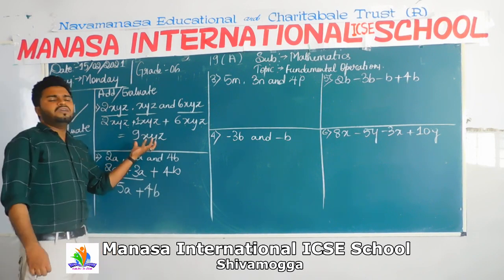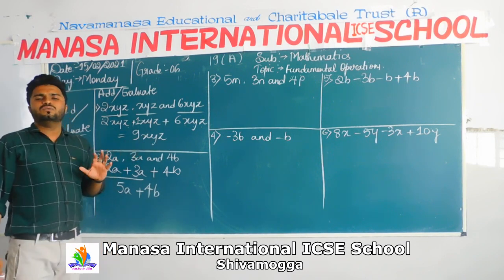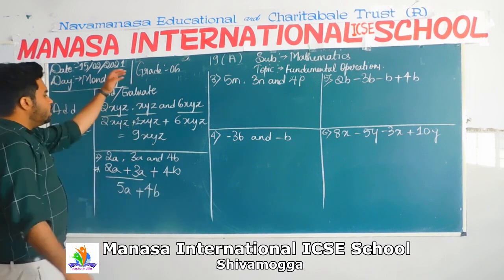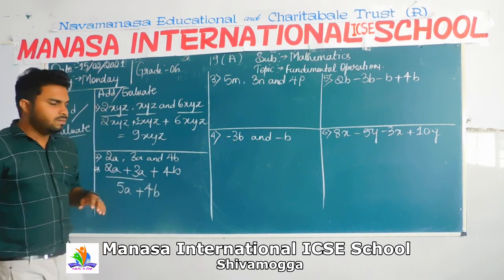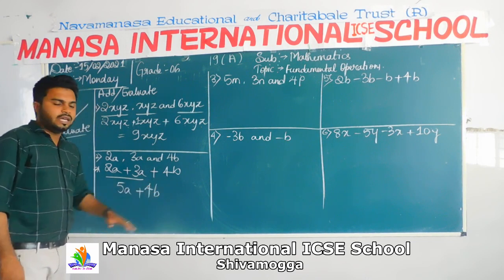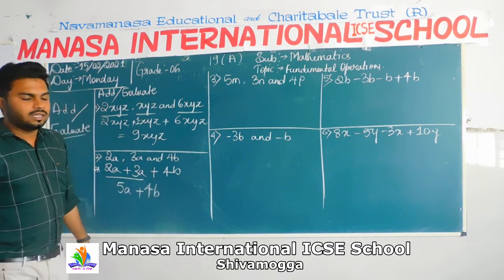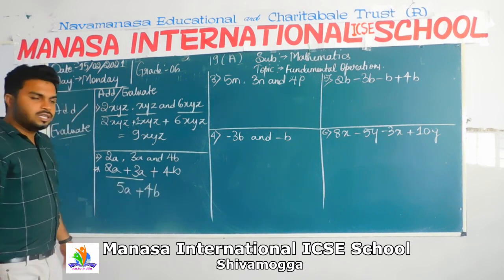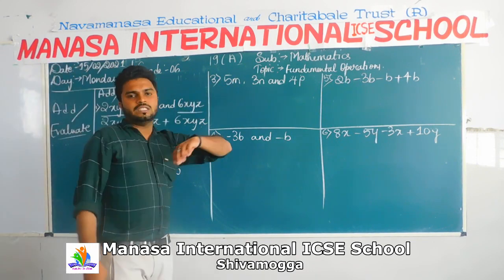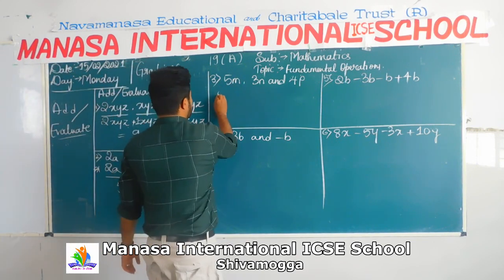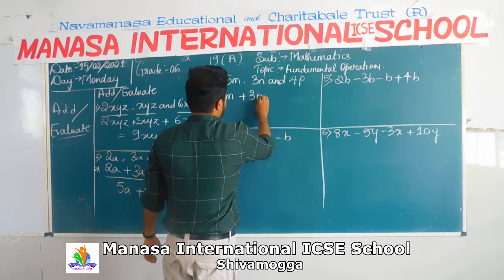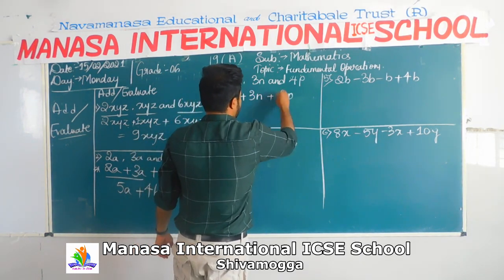Here you have A, A, and B. Two are like terms and one is an unlike term. For that reason, I have written it like this. Coming up for the next problem. Now it is like nothing but 5M plus 3M plus 4B — but looking at the variables, you have M, N, P. These are unlike terms.